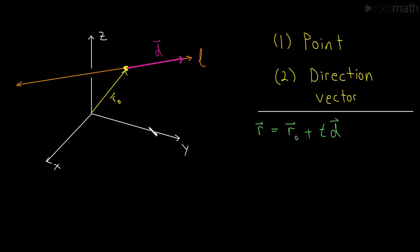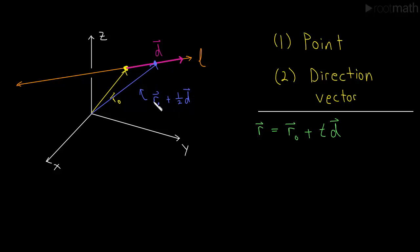What about R0 plus one-half D? Well, one-half D is half of D. So we first march up R0 to get to the point on the line, and then we march over half of D and we get another point on the line. What we're getting is the position vector R0 plus one-half D, which is the position vector of that point. So if we know all the position vectors of the line, then we know all the points on the line. This is called the vector equation of the line.